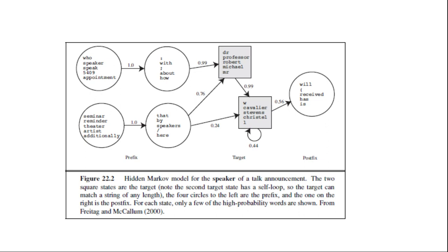With either approach, in the end we have a collection of target attribute observations and must decide what to do with them. If every expected attribute has one target filler, the decision is easy and we have an instance of the desired relation. If there are multiple fillers, we need to choose among them — as with the template-based system — but HMMs have the advantage of supplying probability numbers to help make the choice. If some targets are missing, we need to decide if this is an instance of the desired relation at all or if the targets found are false positives. A machine learning algorithm can be trained to make this choice.